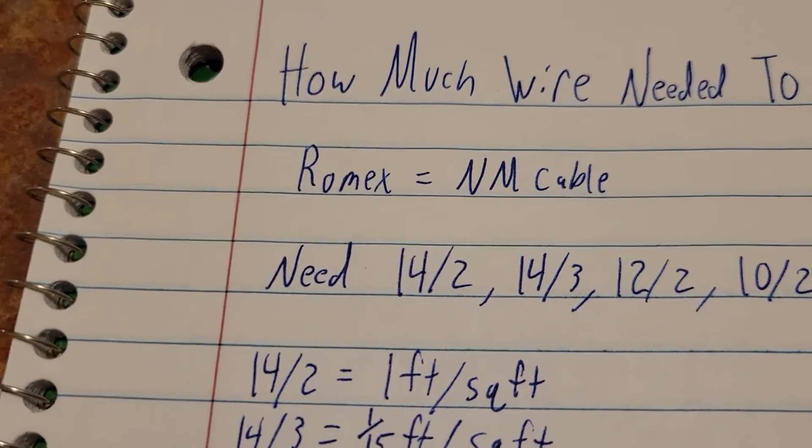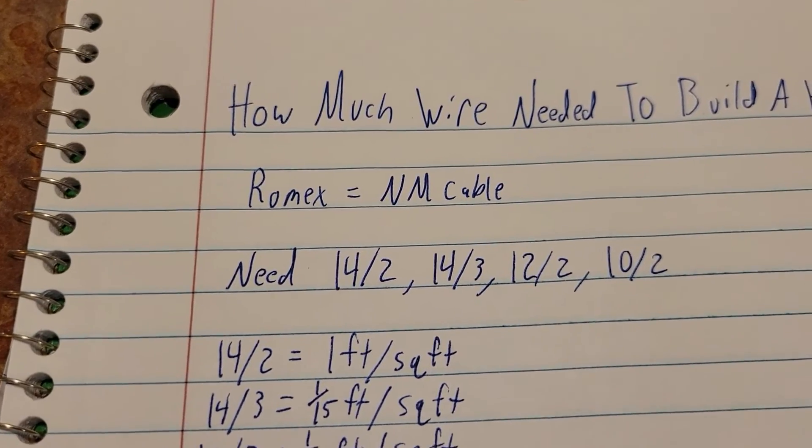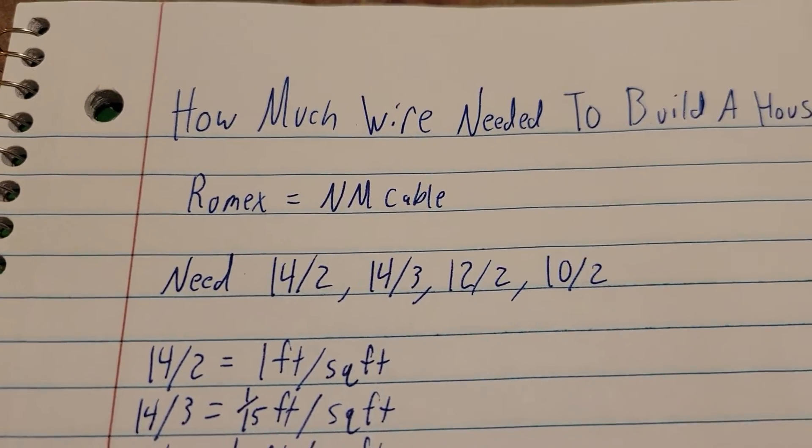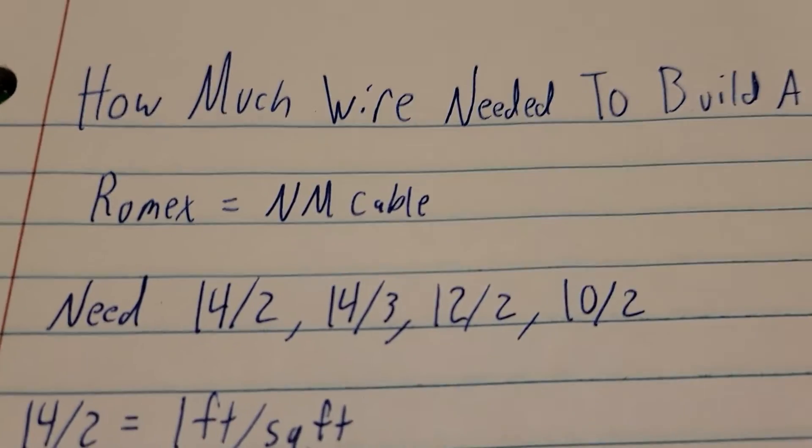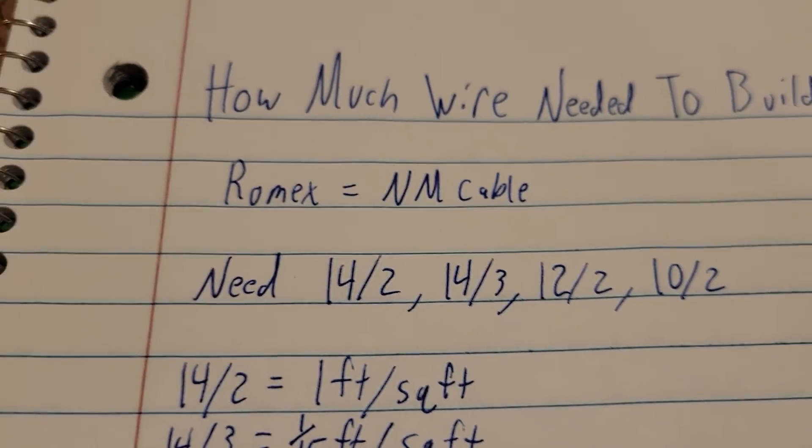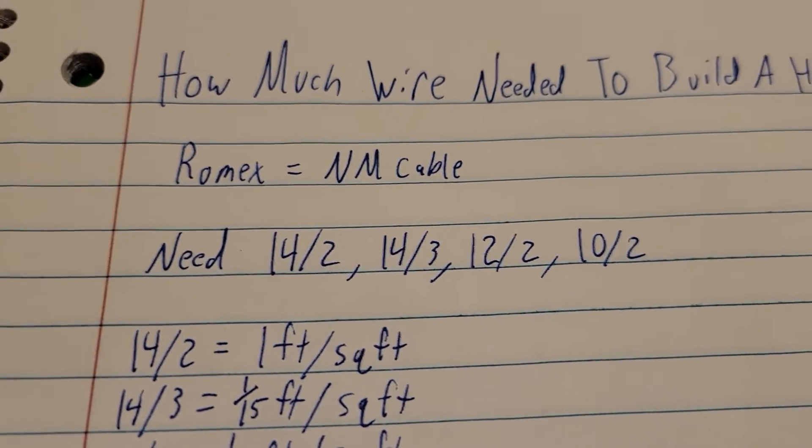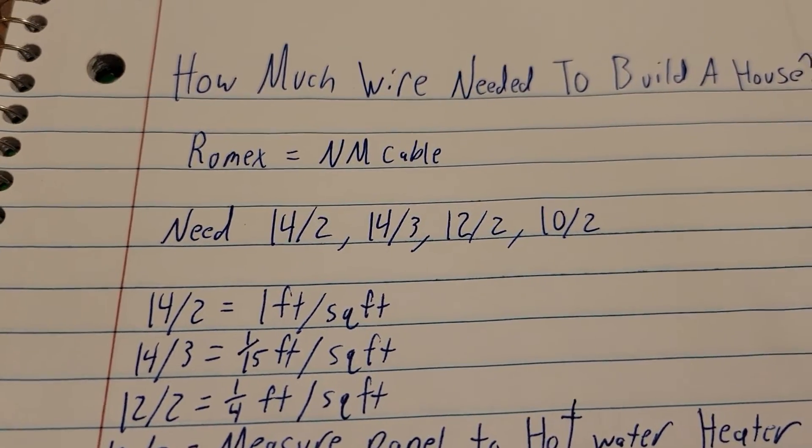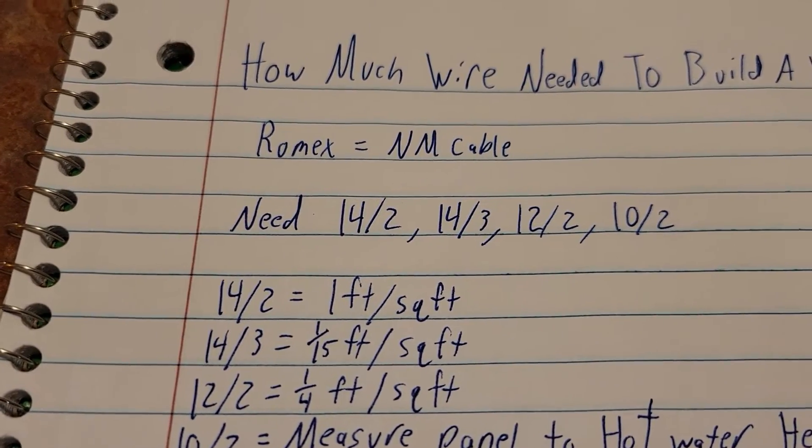So when you go to your Home Depot or Lowe's or whatever supply store to get your wire, you're going to be looking for NM cable. Not all of it says Romex on it - I believe Romex is a brand. The four types of Romex or NM cable you're going to need to buy is gonna be 14/2, 14/3, 12/2, and 10/2.